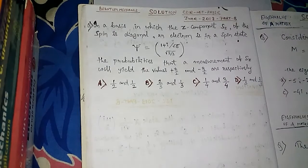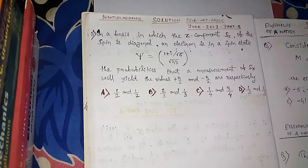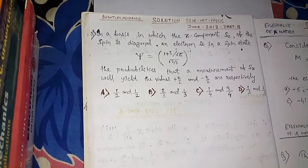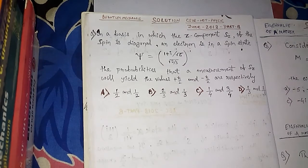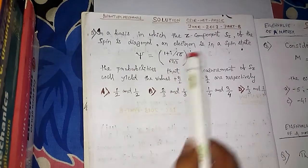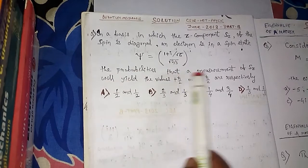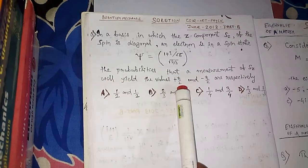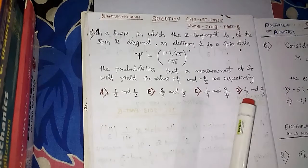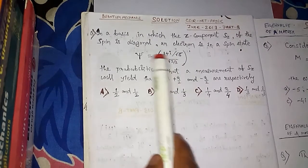Hello friends, this is Vidhan. Welcome to my channel. Today we will see a problem from quantum mechanics from June 2013 Part B. It says: in a basis in which the Z component Sz of the spin is diagonal, an electron is in a spin state psi given by a column vector. The probabilities that a measurement of Sz will yield the values +ℏ/2 and -ℏ/2 are respectively...